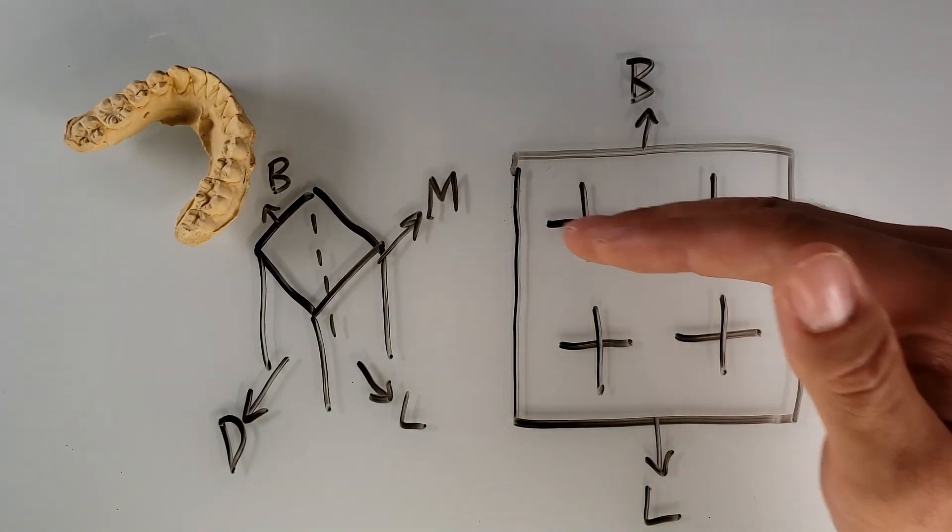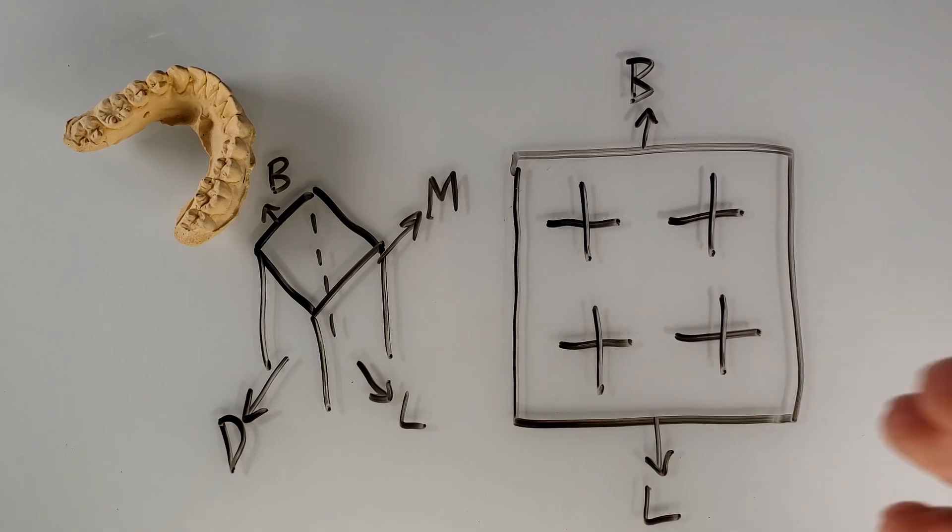This is the buccal cusps. This is the lingual cusps. But how do we know which one we're talking about? Well, this is how.